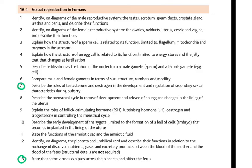Looking at the syllabus, these two points which I have in green are the new things in the syllabus — they were not in the previous syllabus. First: identify on diagrams the male reproductive system. Second: identify on diagrams the female reproductive system. You have to know their functions as well, their names, be able to identify them on a diagram, draw a diagram, label them, and know their functions. Then: explain the structure of a sperm cell as related to its function, limited to flagellum, mitochondria, and enzymes in the acrosome. This is slightly new. Explain how the structure of an egg cell is related to its function, limited to energy stores and the jelly coat that changes at fertilization — slightly new.